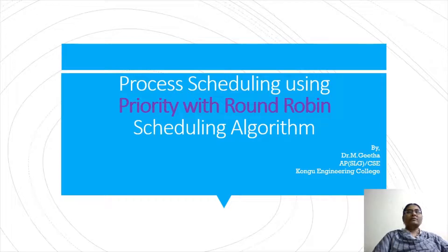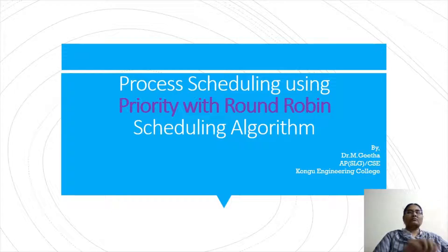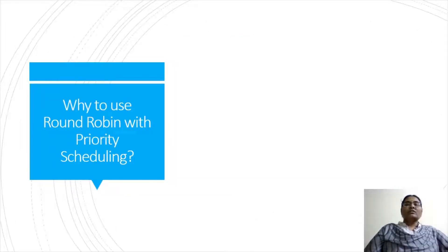Hello viewers, welcome to this video. In this video you are going to learn how to schedule a set of processes using a combination of priority scheduling along with round robin scheduling algorithm. So why should we use round robin algorithm along with priority scheduling?